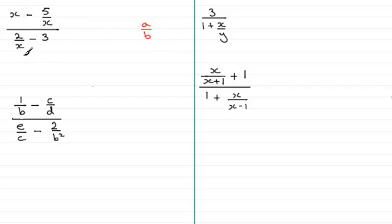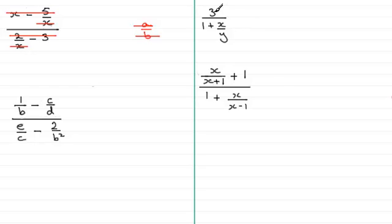Whereas in this algebraic fraction we've got four levels — one here, one here, and then one on that line and one on that line. We want to reduce it down to just two levels. In this fraction here we've got not four levels but three levels — one here, one here, and one here. So how do we reduce these types of fractions down to two levels? Well that's the purpose of this video.